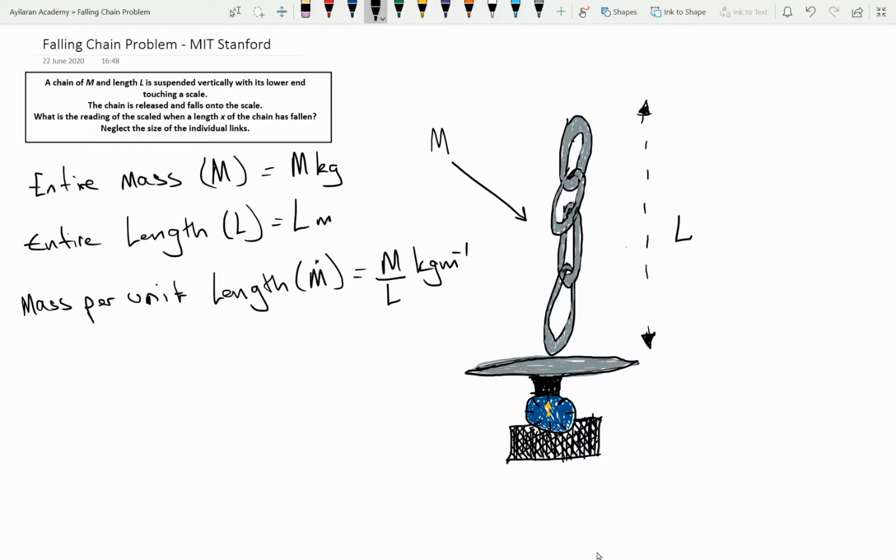Now I'm going to write an integral which would give us or define to us the entire mass of the chain assuming that we increment our way from the beginning of the chain to the entire length of the chain. Now the increment is going to be DX because we are traveling in a distance X and here I'm going to illustrate myself basically dividing the length L into increments of DX.